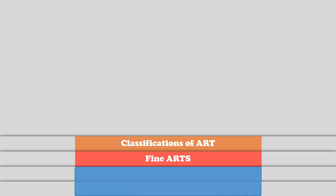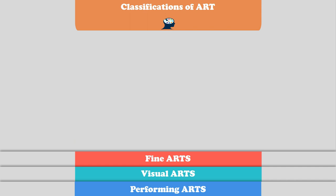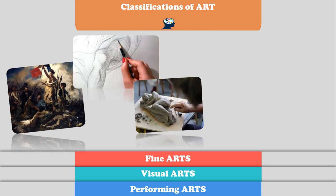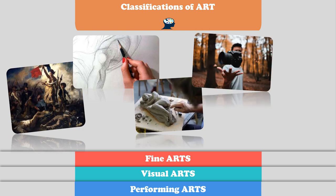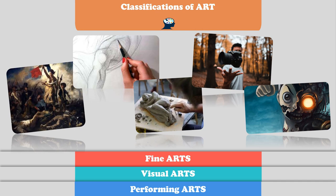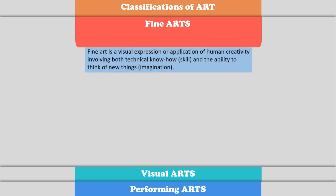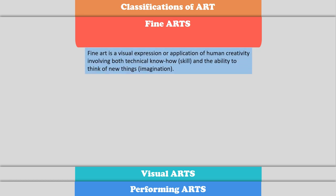Classifications of art: fine arts, visual arts, performing arts. Today we talked about where painting, drawing, sculpting, photography, digital art, and some other types of art belong. Fine art is a visual expression or a tradition of your creativity — it is more on how you can make something out of your imagination.